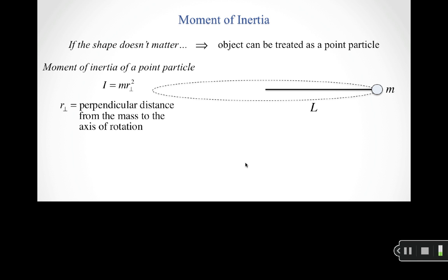When shape doesn't matter, we can treat objects as point particles. The moon orbiting the Earth can be treated as a point particle. The equation for the moment of inertia of a point particle is I = m·r⊥², where r⊥ is the perpendicular distance from the mass to the axis of rotation.